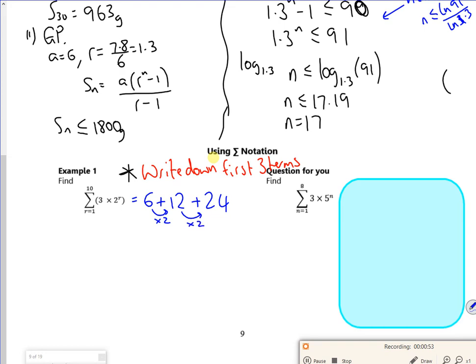So the first two terms, you don't know if it's an AP, adding on 6, or a GP, multiplying by 2. But by having the third term, it tells you what you've got. So I want a to be 6, r to be 2, and what's the sum of the first 10 terms? So n is 10.